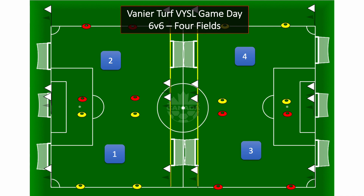This is Vanity Turf with four fields set up. You can see how the yellow lines designate where the goals go, and we just use cones and flag poles to designate the four fields. At the end of the day, the last group will have to take the fields down. If you can put the nets into the cubby holes they'd appreciate it, and the ones on the end can just be pushed back.